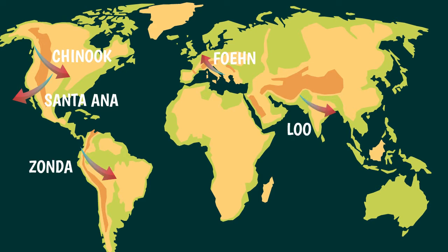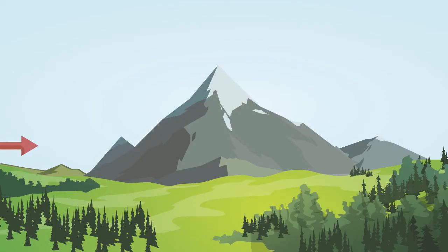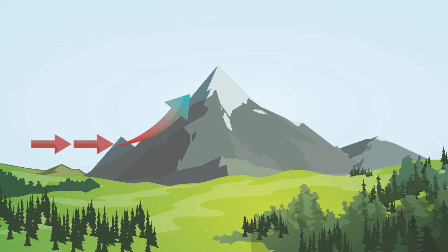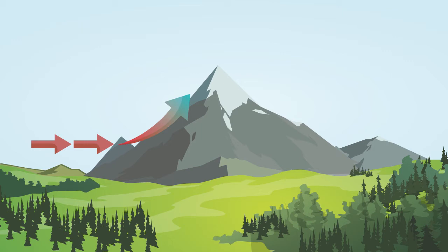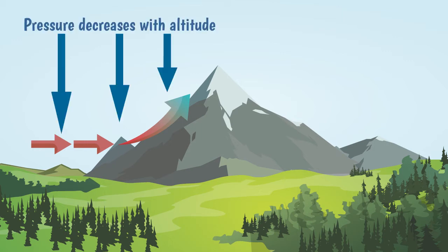So let's see how foehn winds are formed. When winds encounter a mountain high enough to block their passage, the air is pushed up along its flanks, and as the air rises, it cools down. As the air rises, it experiences less and less pressure, because the higher the air is, the less air molecules are above it, so air particles experience less and less weight on them.